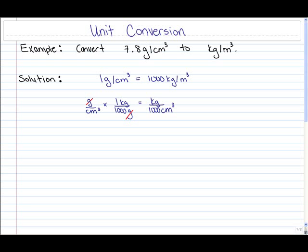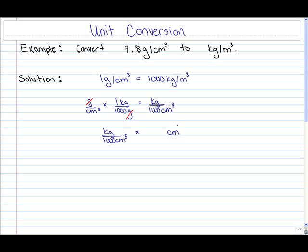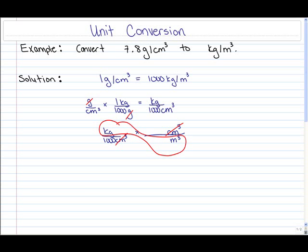Now all we need to do is convert the cubic centimeters to cubic meters. If we take what we just found and multiply it by some amount of cubic centimeters per cubic meter, we would cancel out the cubic centimeters and end up with kilograms per cubic meter, which is what we want to obtain.